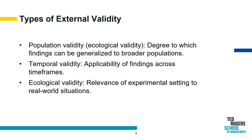The various dimensions of external validity manifest in distinct forms, each contributing to the comprehensive applicability of research findings. Population validity, often synonymous with ecological validity, encapsulates the extent to which study outcomes can be generalized to broader populations, ensuring the relevance of the research beyond the confines of the specific participants involved. This speaks to the broader societal implications and applicability of the experimental results.